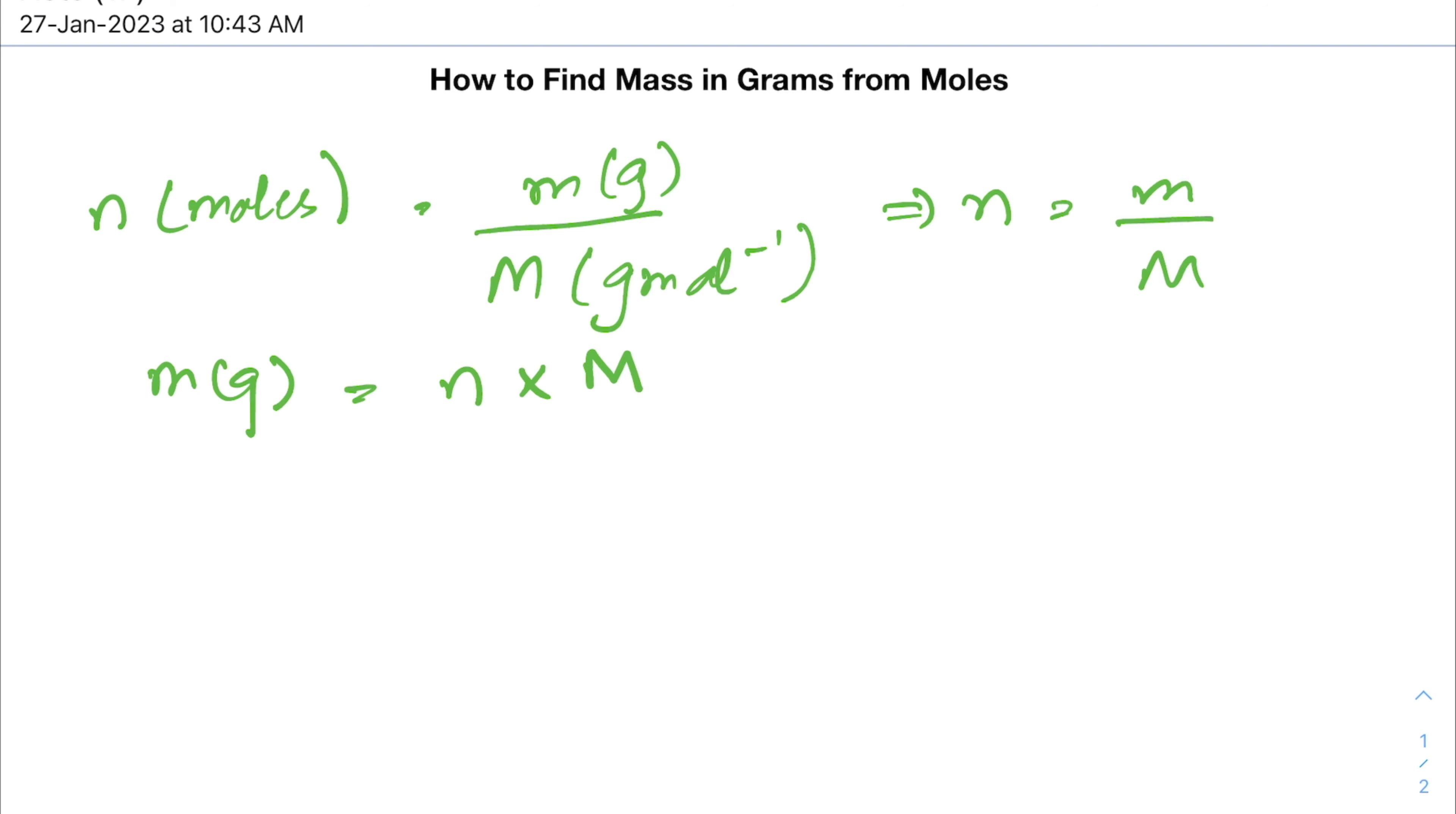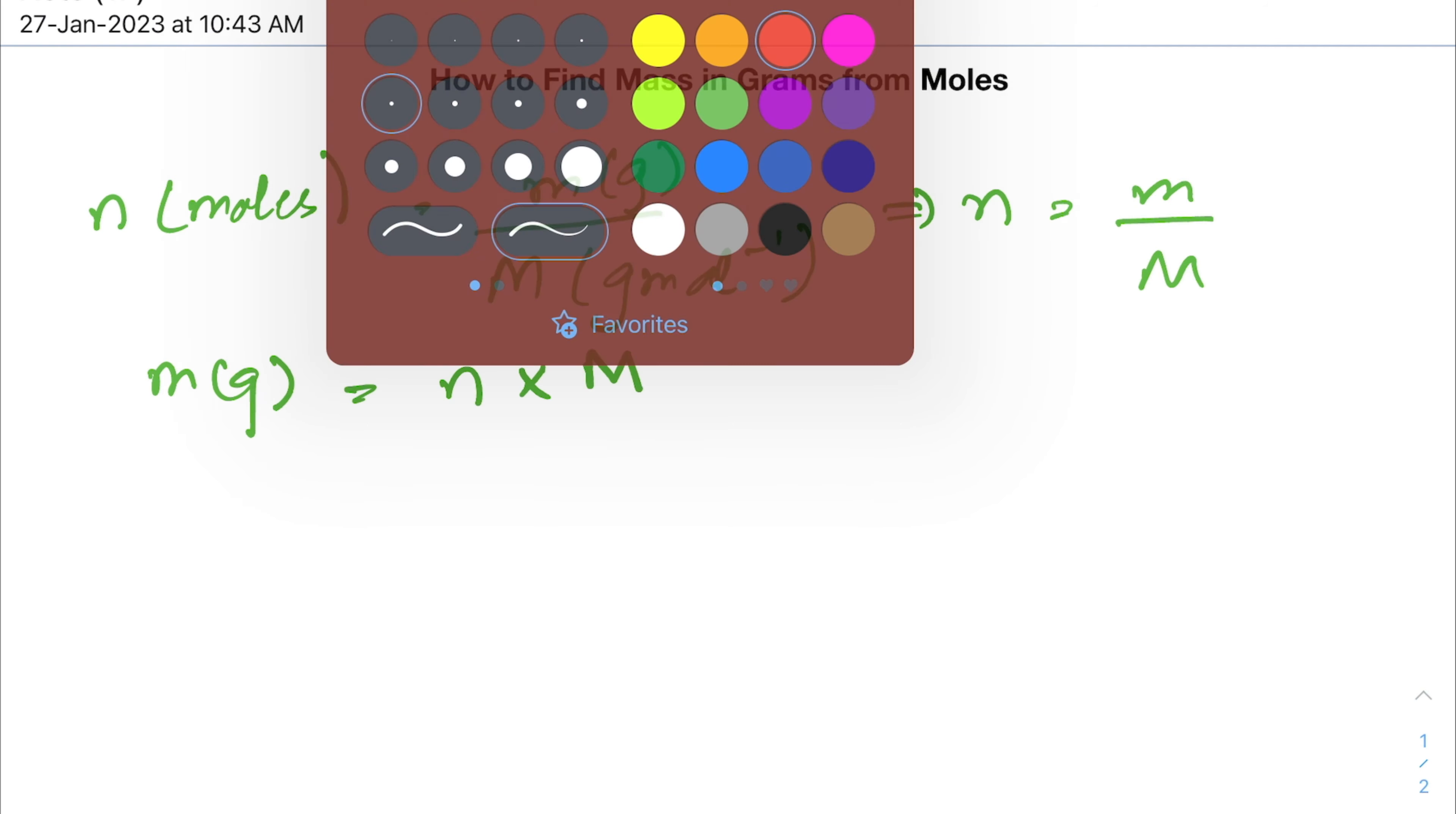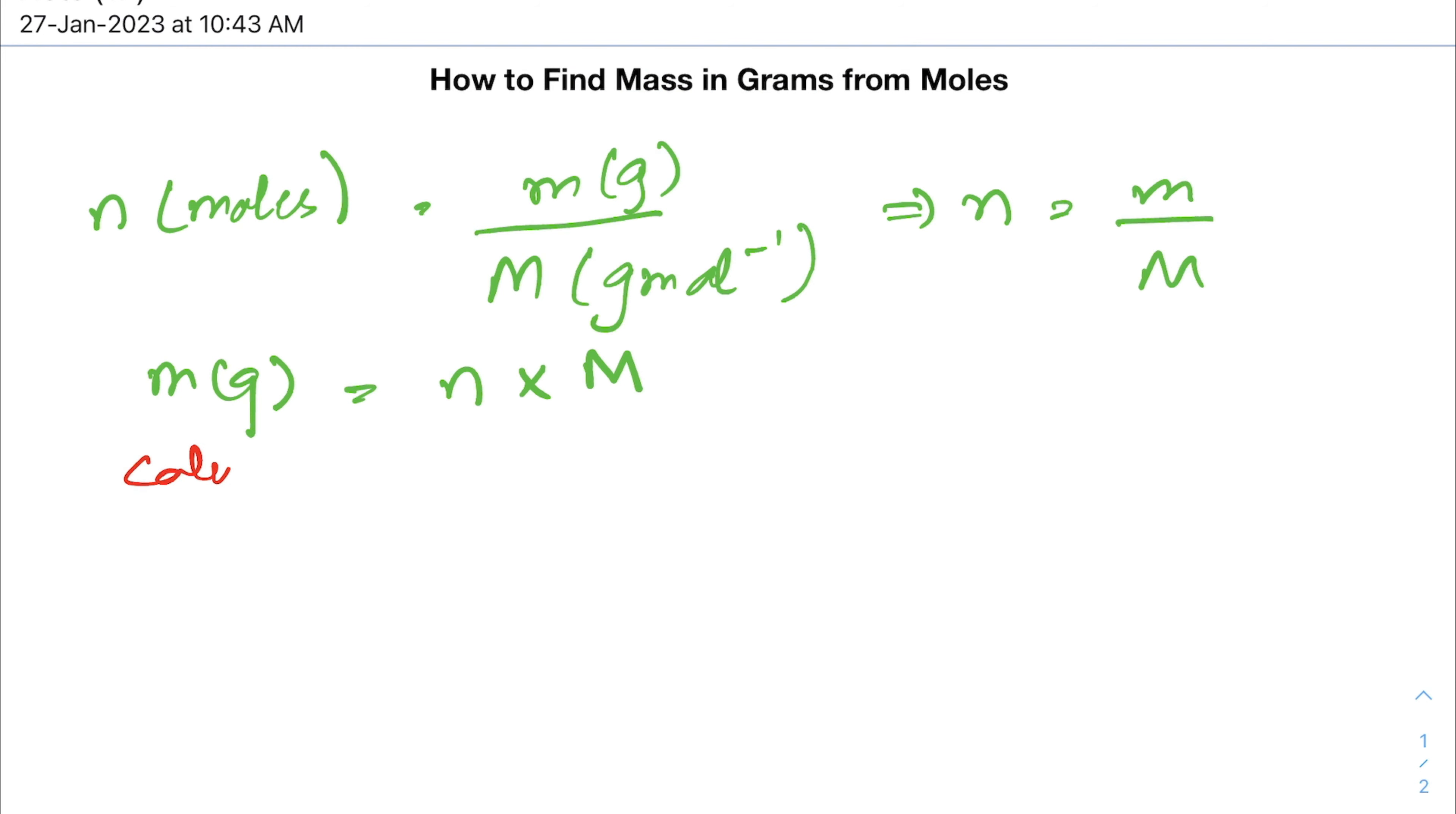For this, we take the example: calculate the mass in grams of 0.6437 mole of calcium carbonate (CaCO3). So first, we find out the molecular mass of calcium carbonate.